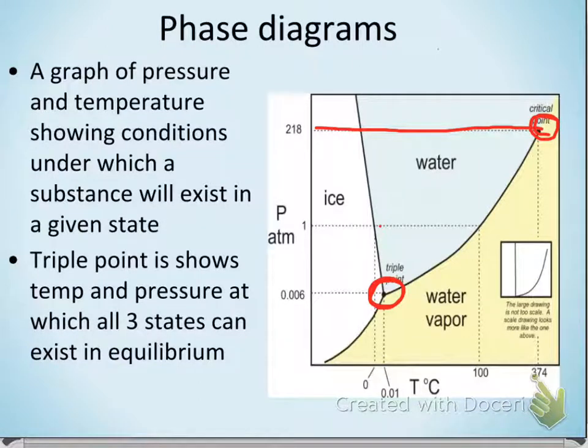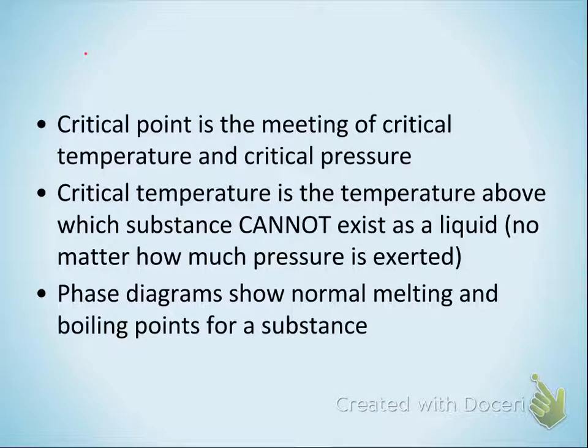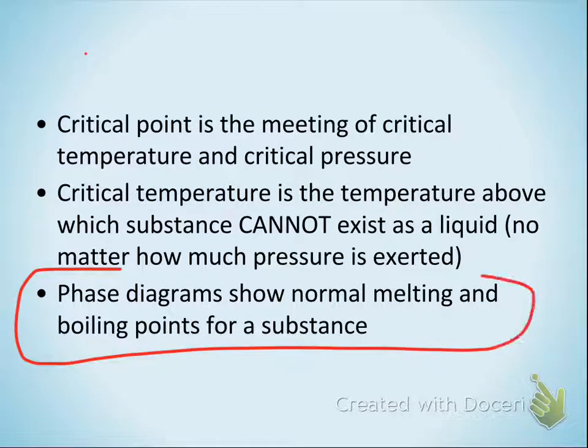Triple point, you can have all three phases in equilibrium. Critical point is the point of pressure above which you cannot get something to vaporize. There's too much pressure. The molecules just can't escape. This is that critical point, critical temperature. And we can do a phase diagram for anything.